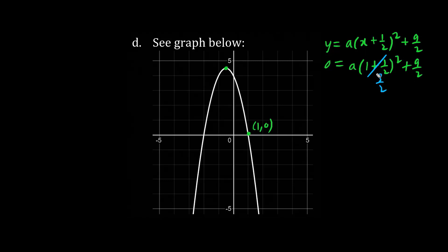And 1 plus 1 half is 1.5 or 3 over 2. What is 3 over 2 squared? It's 9 over 4, and we're multiplying by A. Let's throw this 9 over 2 to the left. We have negative 9 over 2. And we'll divide both sides by 9 over 4. So when we divide both sides by the coefficient of A, we have 9 over 2 divided by 9 over 4 on the left-hand side. So A equals negative 9 over 2 multiplied by the reciprocal, which is 4 over 9. These 9's cancel and negative 4 divided by 2 is negative 2.